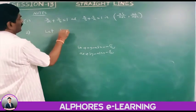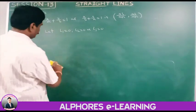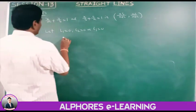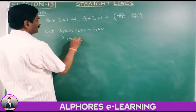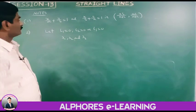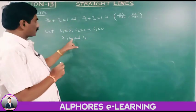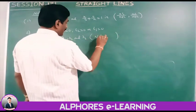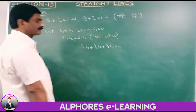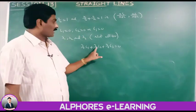Second theorem: let l1=0, l2=0, and l3=0 be three concurrent lines. Then there exist scalars lambda-1, lambda-2, and lambda-3 (not all zero) such that lambda-1·l1 plus lambda-2·l2 plus lambda-3·l3 equals 0.